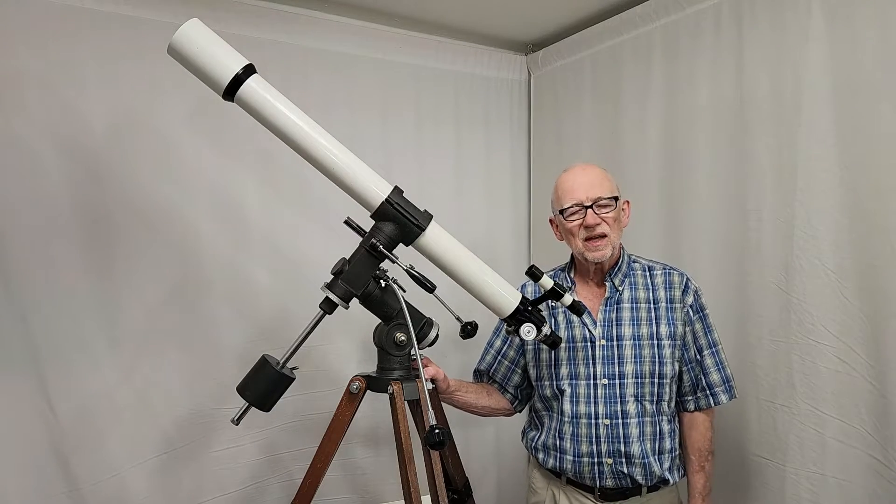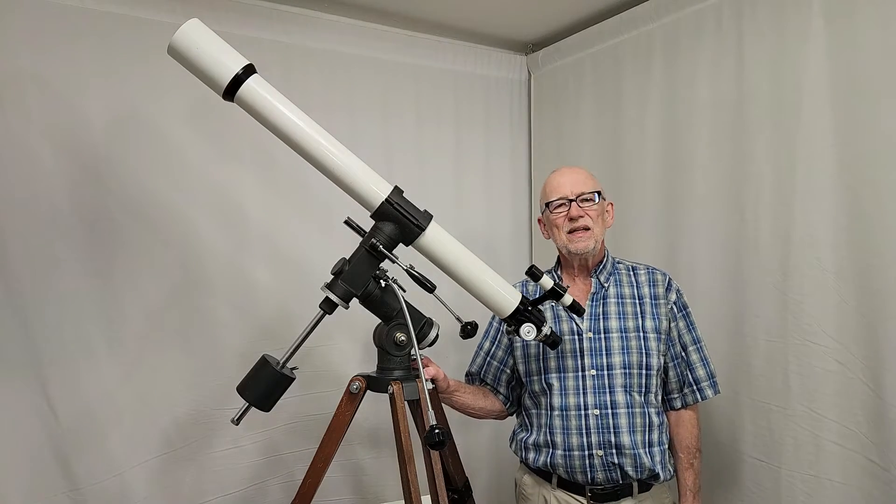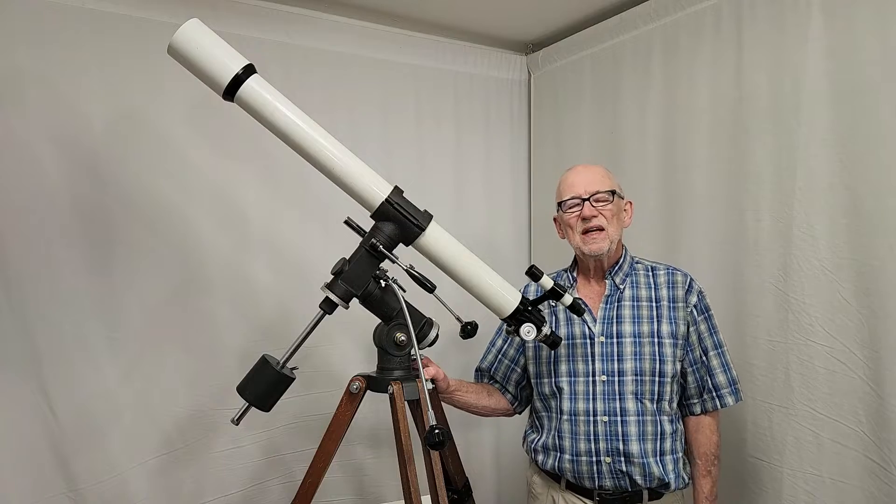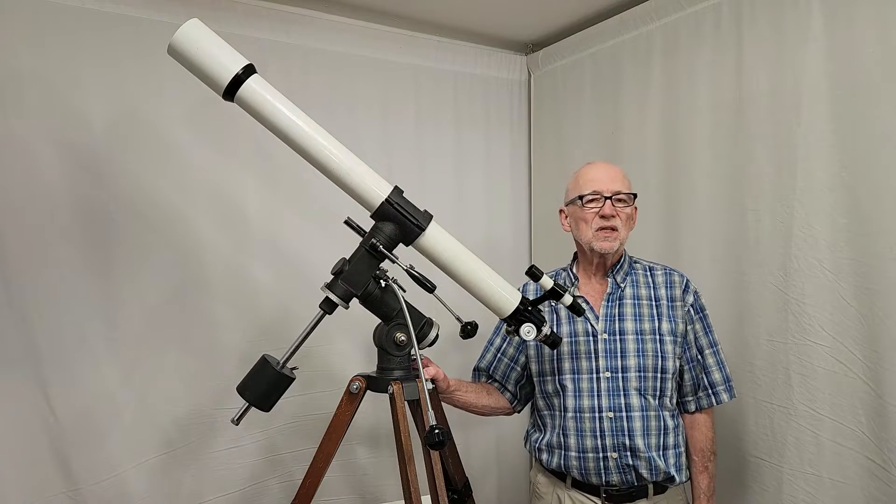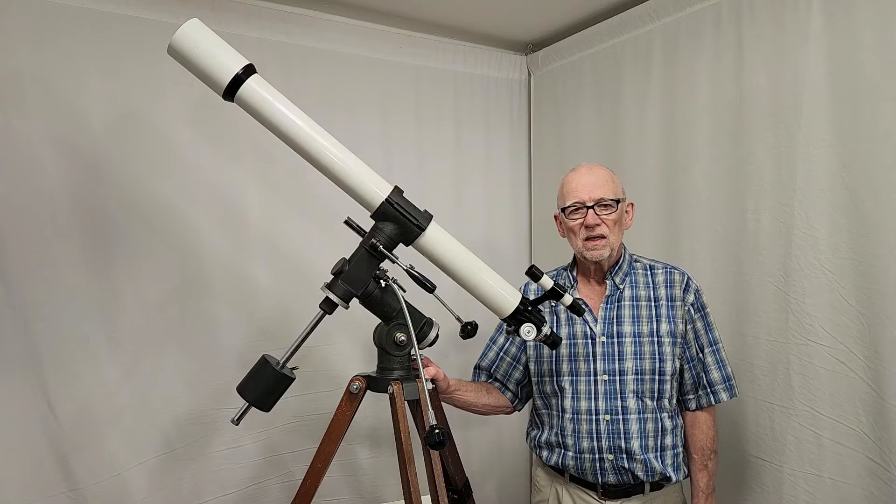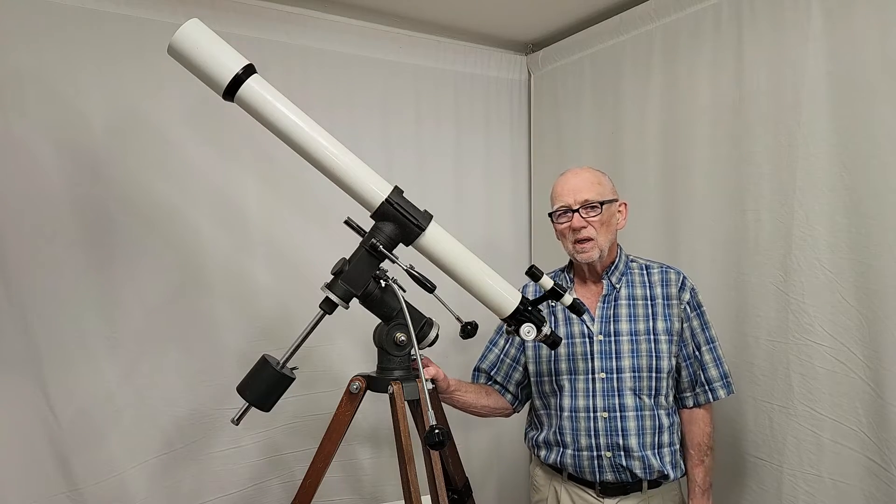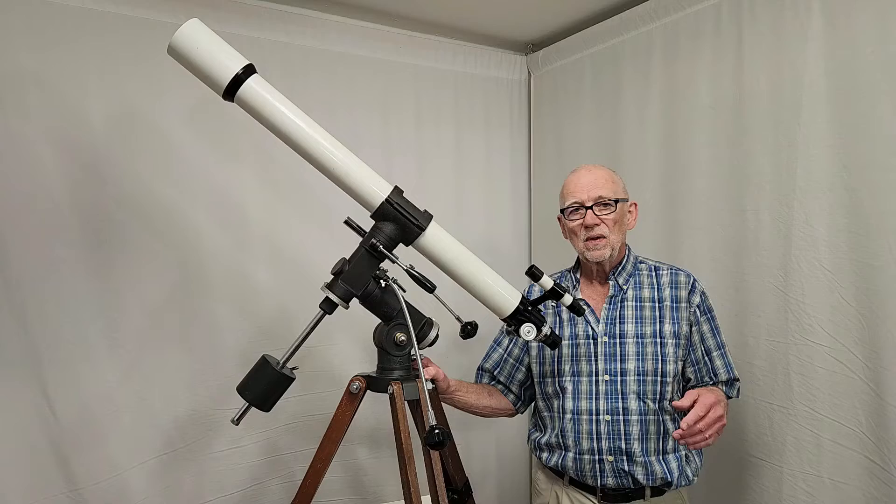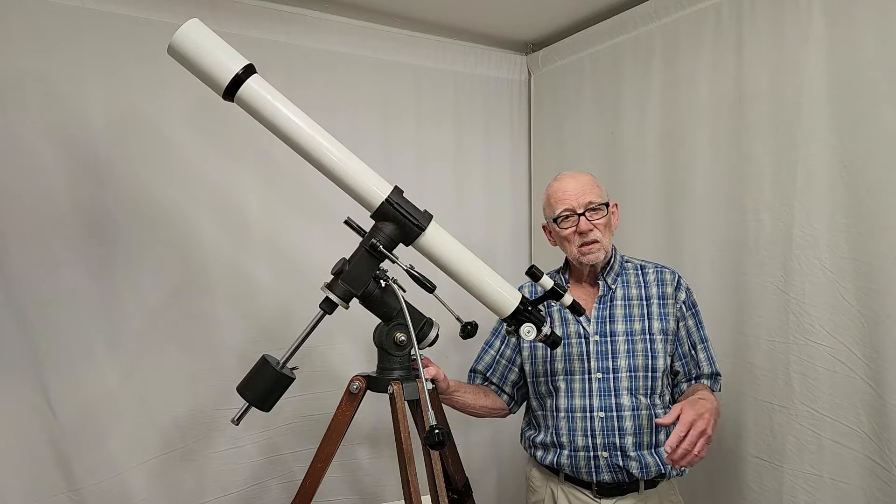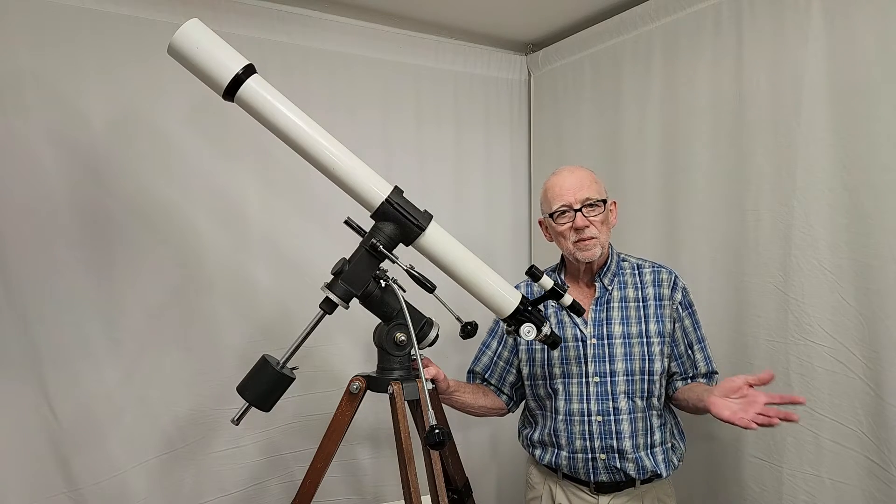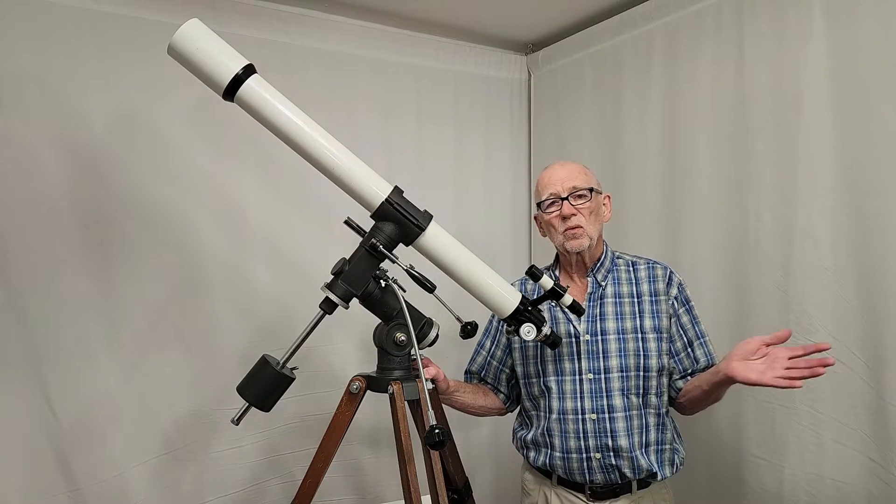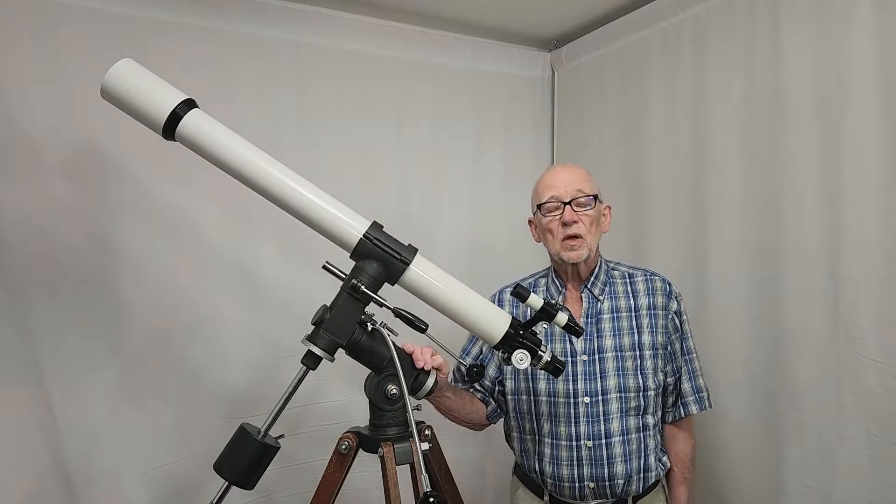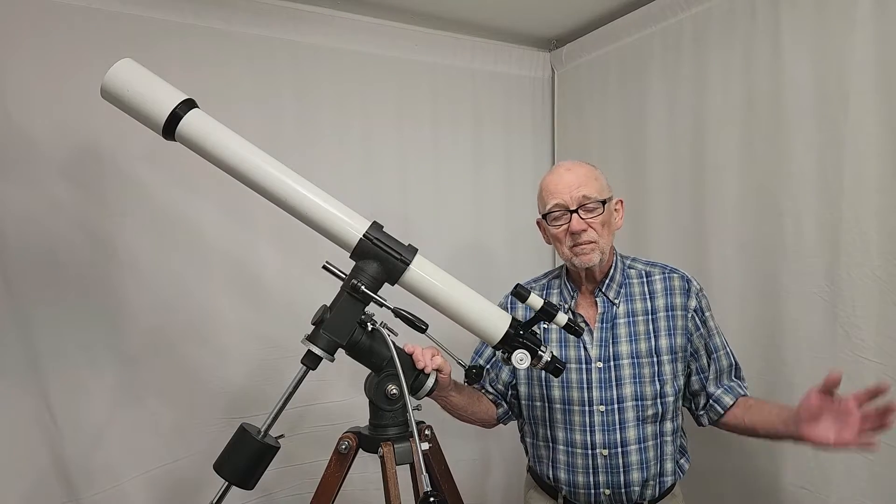Hi, my name is Dave. Today we're going to look at the TS-65D type made by Takahashi, introduced in 1970. It's an unusual telescope in several ways. It's got a thousand millimeter focal length, 65 millimeters aperture. It's a triplet semi-apochromat. So what is a triplet semi-apochromat? What does that mean?